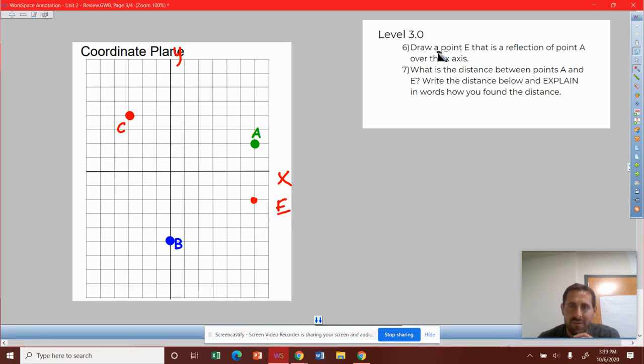So draw a point E that is reflected over A. Check. What is the distance between points A and E? Write the distance below and explain in words how you found the distance.